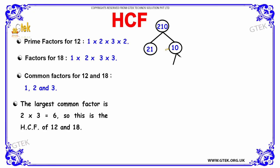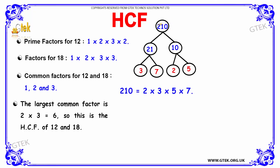Let us see another example for HCF. We have the numbers 21 and 210. 210 can be written as 21 multiplied by 10. 21 is 3 into 7, and 10 can be factorized as 2 into 5. So the prime factor list for 210 is 3 into 7 into 2 into 5, and on multiplying these you get 210.